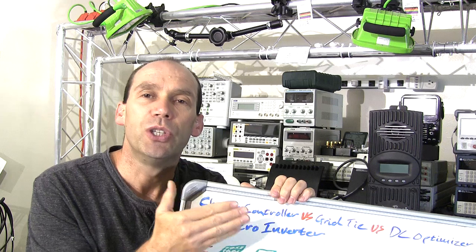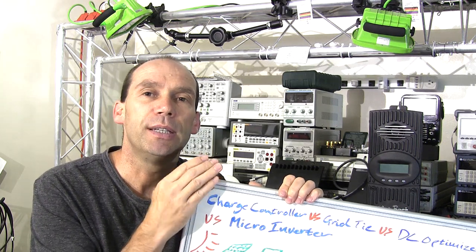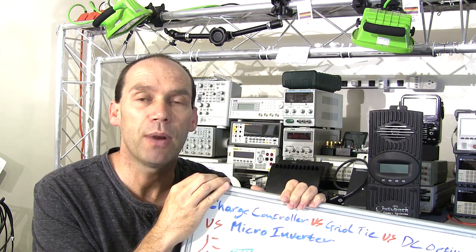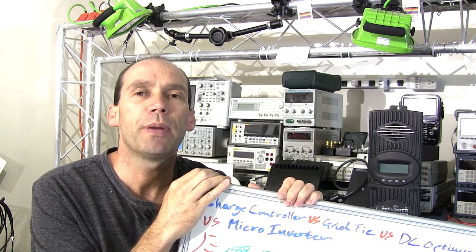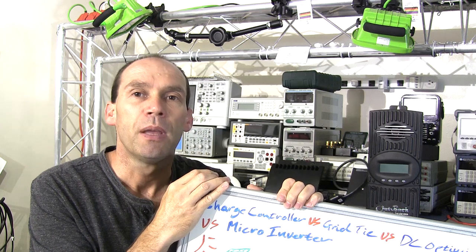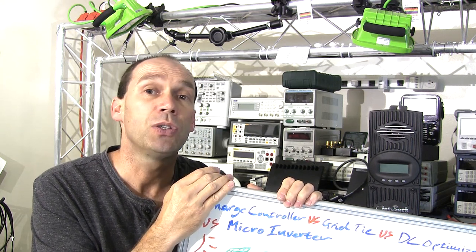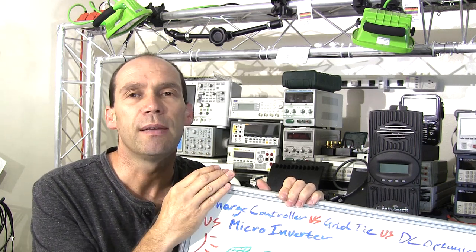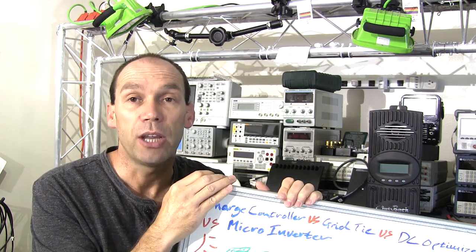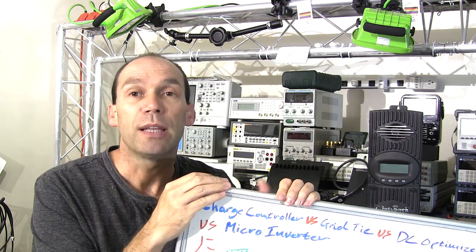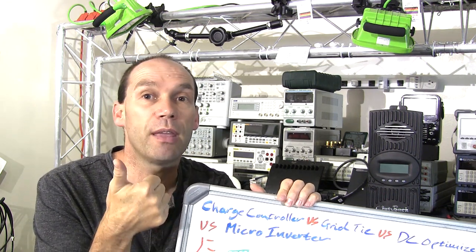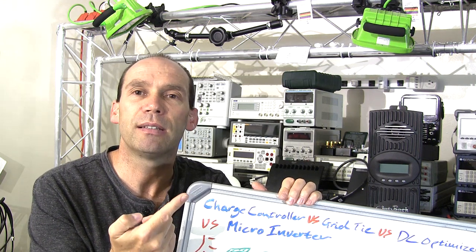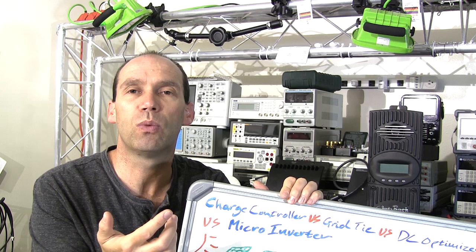One of the other challenges with these newer technologies — in particular the DC optimizers and the micro inverters — is that they haven't been around for a long time. They started making their appearance in the 90s and came to market around 2008-2009, but probably only in the last two to three years has there been a larger installation of them. Still, two to three years is not a lot of time to fully understand their reliability and gather enough data to understand how well they perform in different parts of the world.